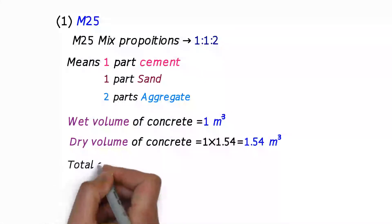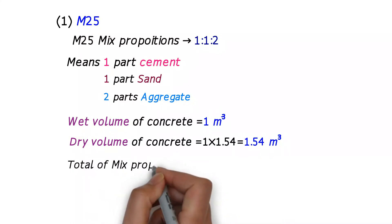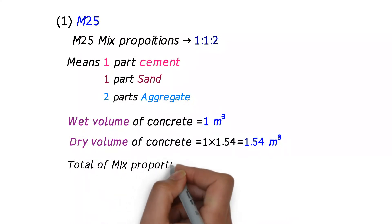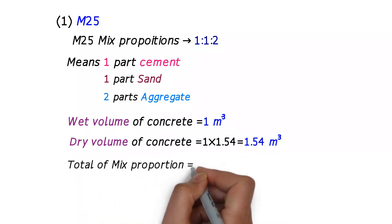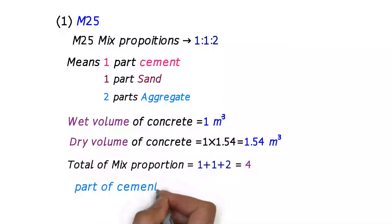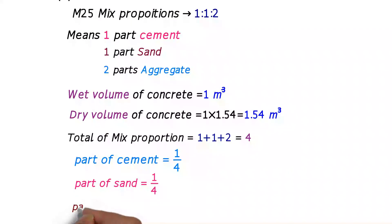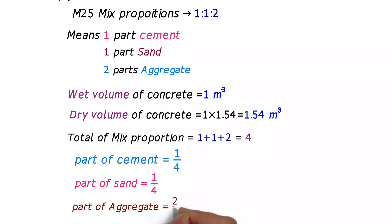The total of mix proportion is 1 + 1 + 2 = 4. The part of cement in total mix proportion is 1/4, the part of sand is 1/4, and the part of aggregate is 2/4.